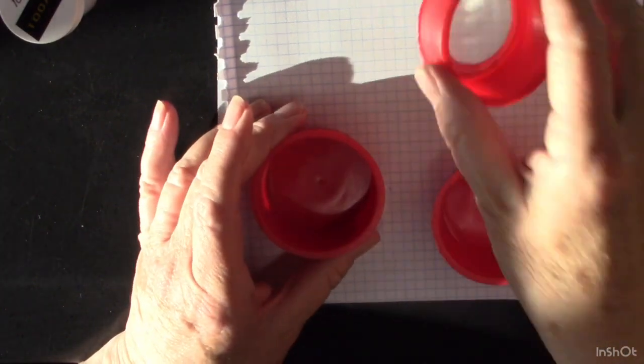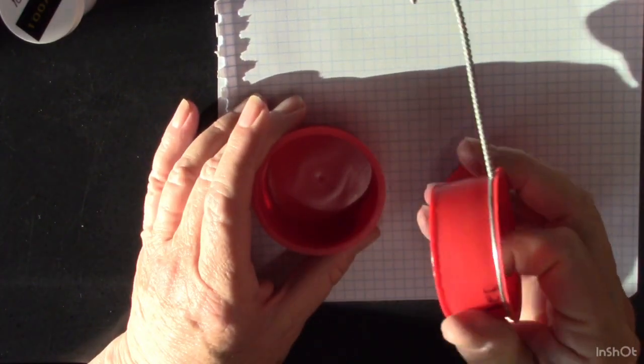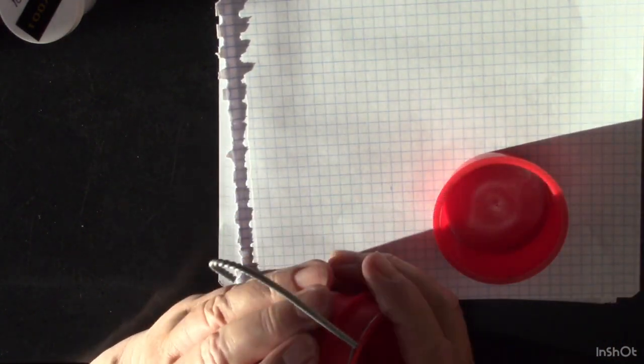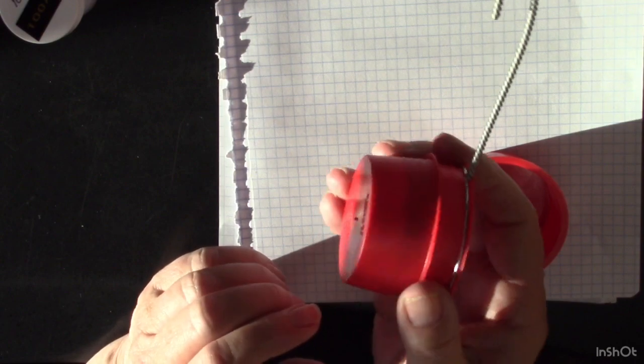So what I'm going to do here is I'm going to take my 325 mesh sifter and I'm going to put the cap on the bottom of that.